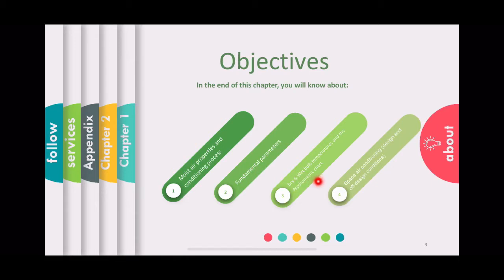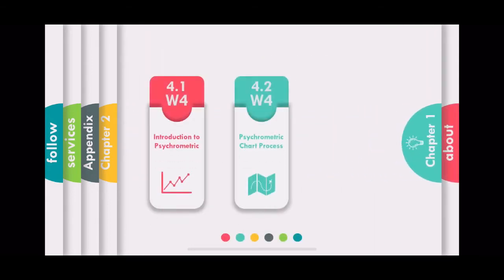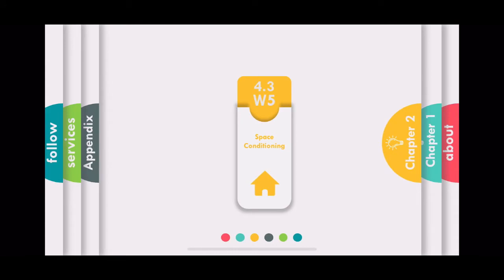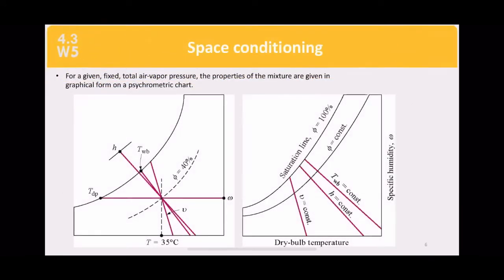We will also cover space air conditioning design and off-design conditions. We have already gone through sections 4.1 and 4.2 in the previous Week 4 video, so now we concentrate on space conditioning. Looking at the psychrometric chart on the slide, these are some of the points we have covered so far.